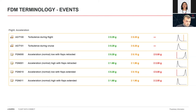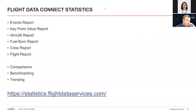You could compare your key point values to everyone — that's a valid way to do a direct comparison. But if you want to compare events, that's the IATA flight data exchange program. So this is where we jump into the Flight Data Connect statistics platform. There are different reports available: the events report, the key point value report — those are the two we'll focus on — as well as the aircraft report, fuel burn, crew report, and flight report.